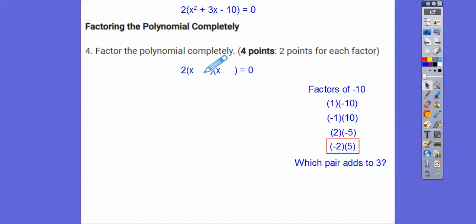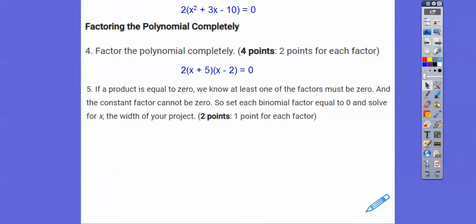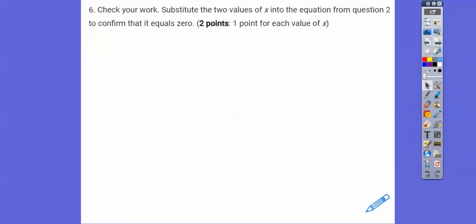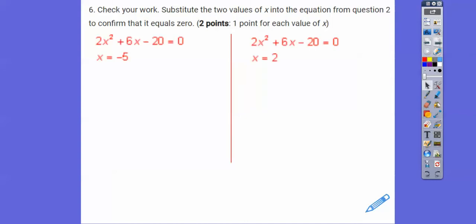So the factored form is 2(x + 5)(x − 2) = 0. Since something times something equals zero, at least one factor must equal zero. The constant 2 doesn't equal zero, so we set each binomial equal to zero: x + 5 = 0 and x − 2 = 0. Solving gives x = −5 and x = 2. We can toss out the negative because we're talking about lengths, but first they want us to check our work by substituting both values.